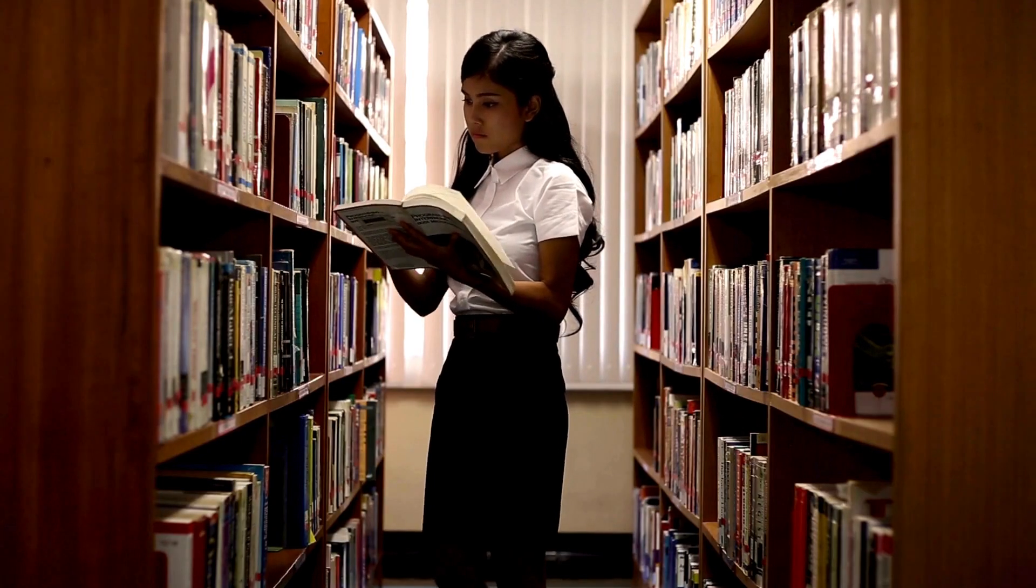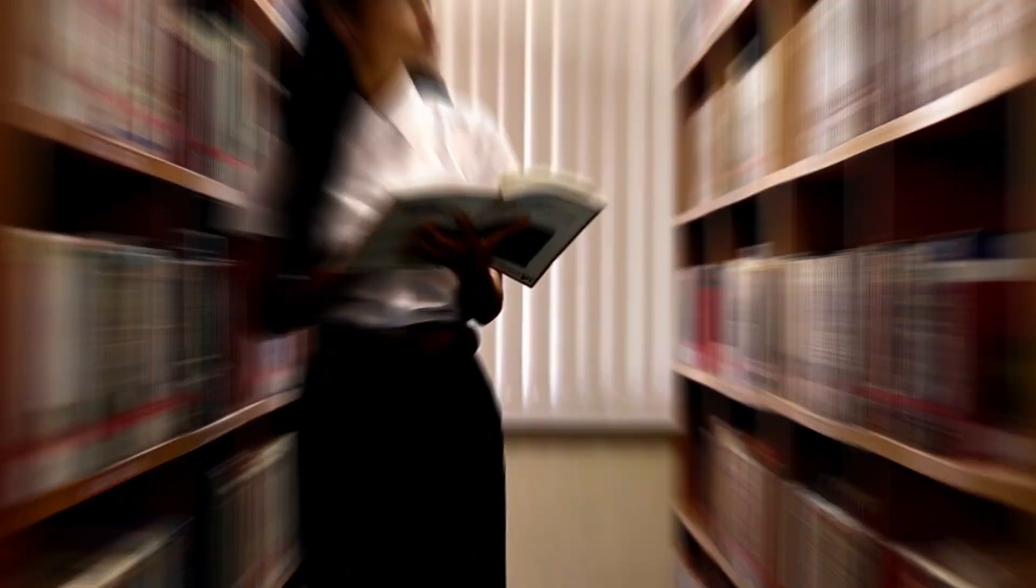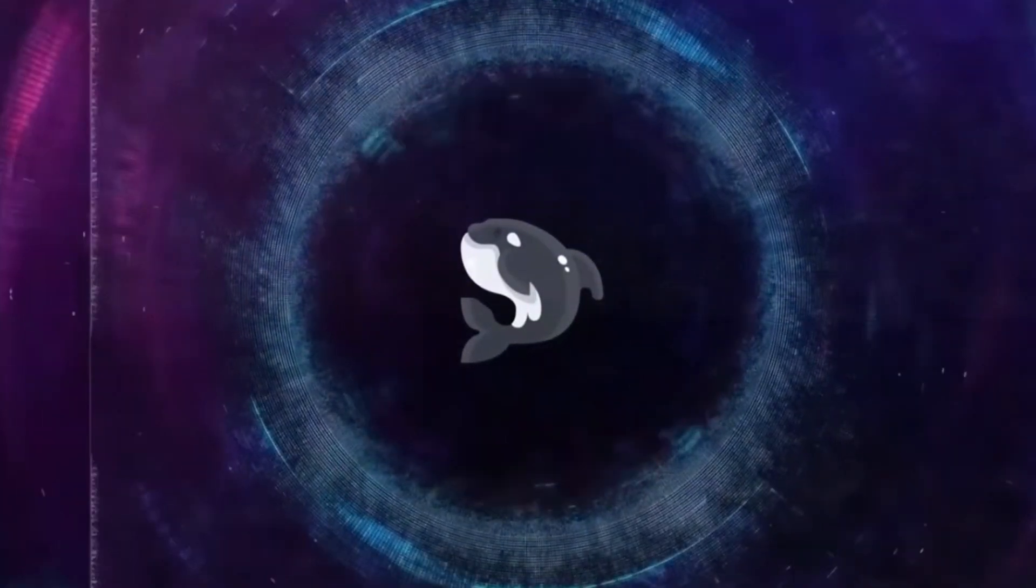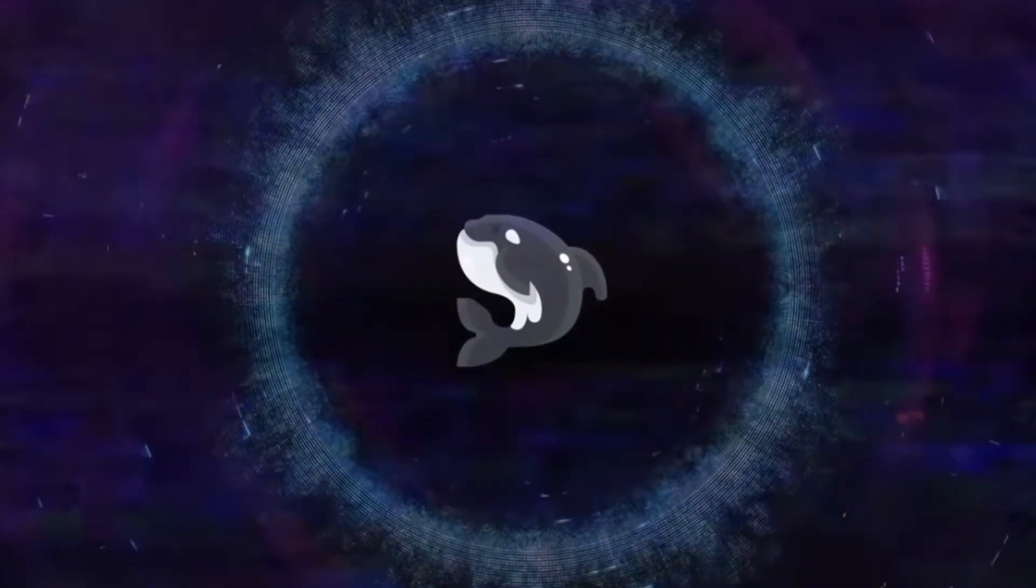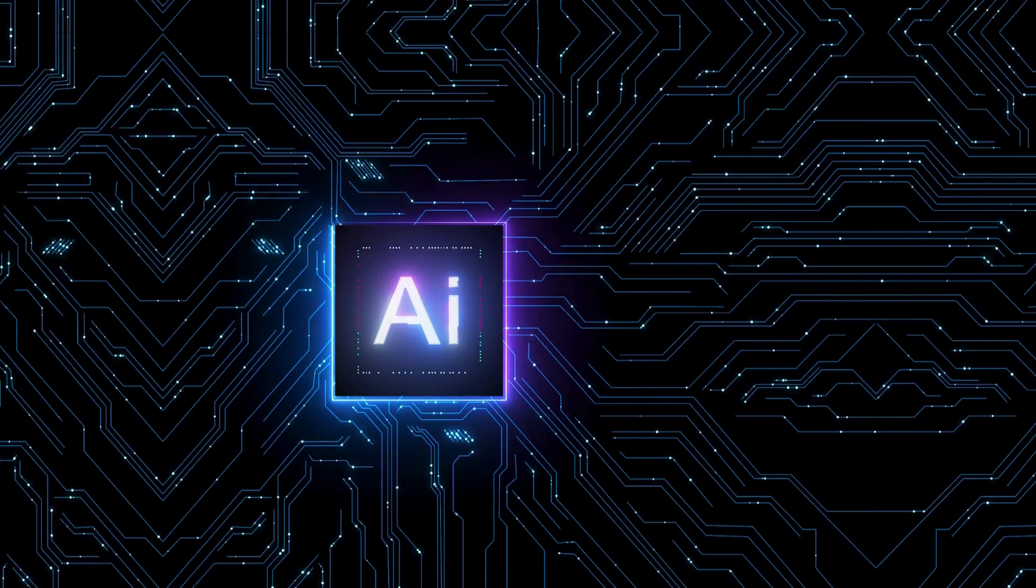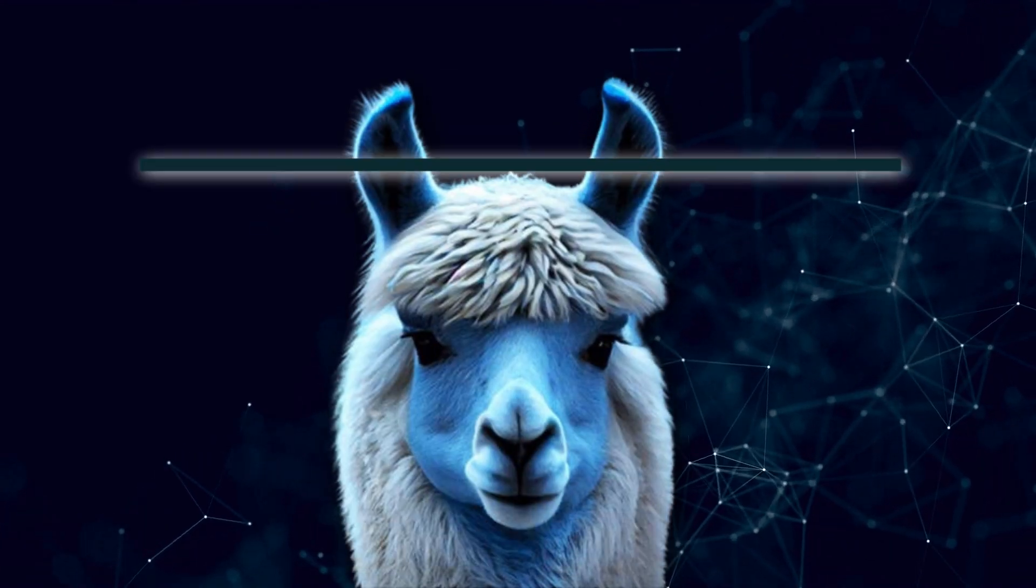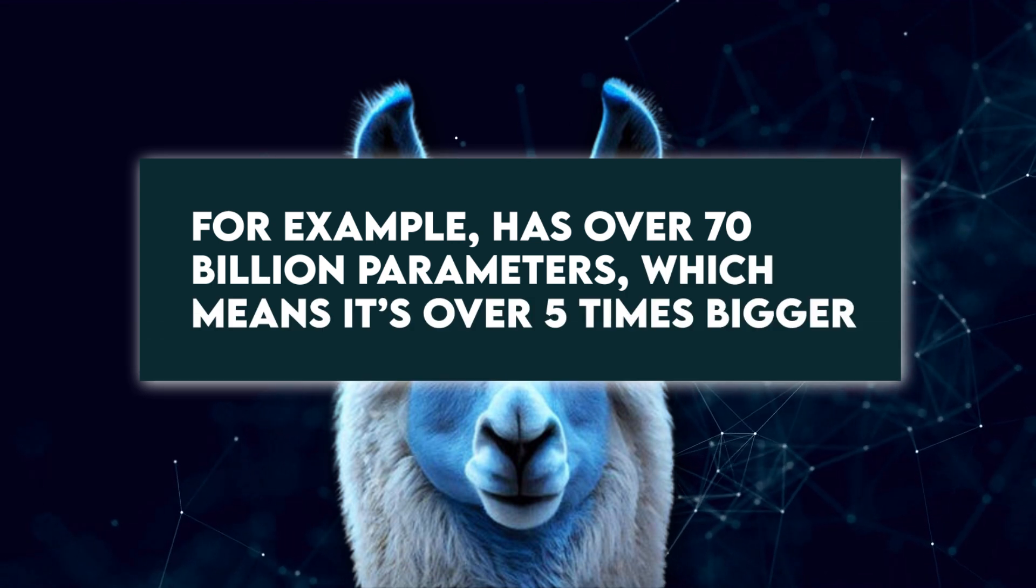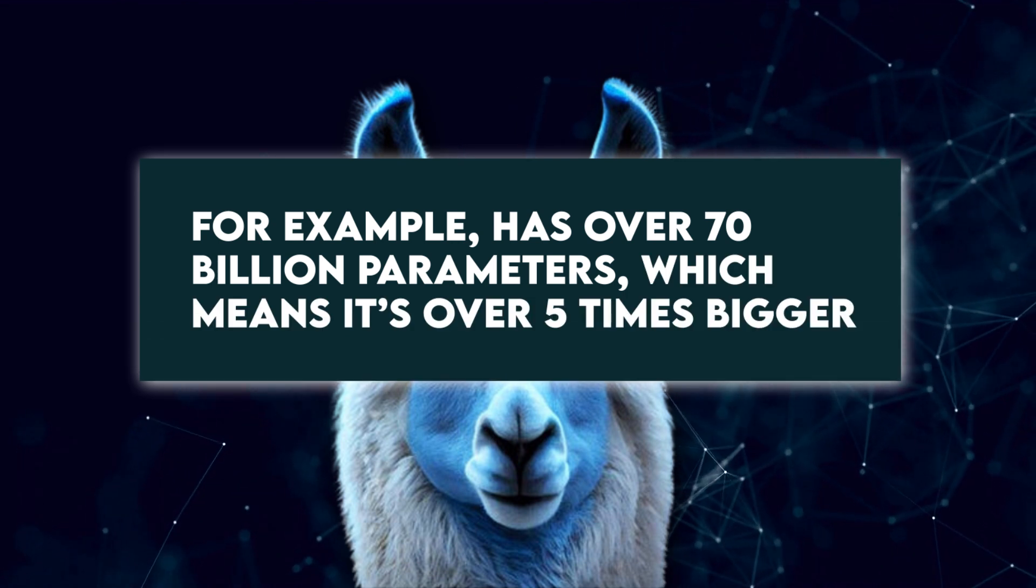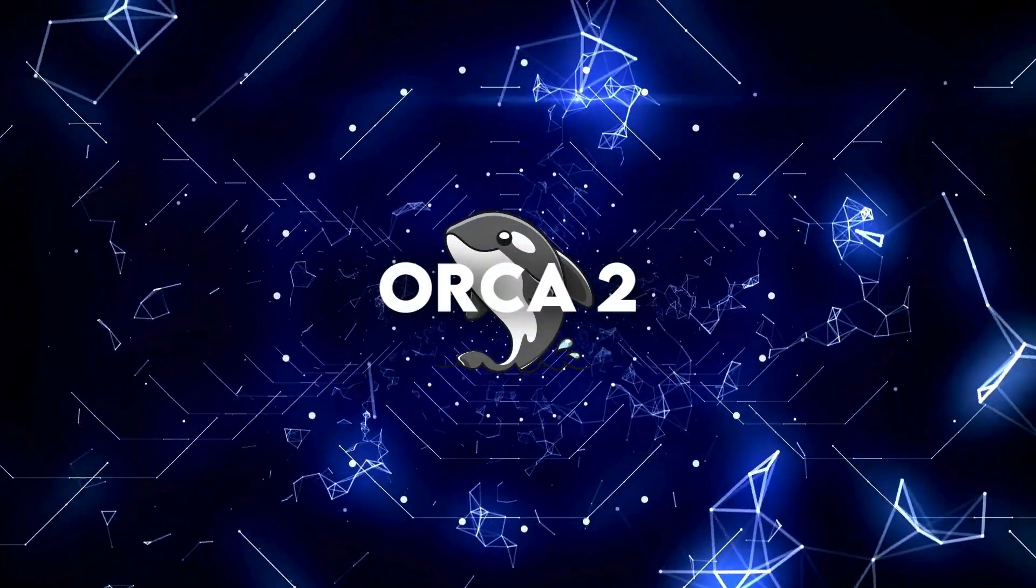The first version of Orca, and other models several sizes bigger, were evaluated with the same benchmark, and Microsoft's AI still beat the odds by coming out on top. Llama 270b, for example, has over 70 billion parameters, which means it's over 5 times bigger. Yet Orca 2 surpassed the large model by a whopping 10 points.